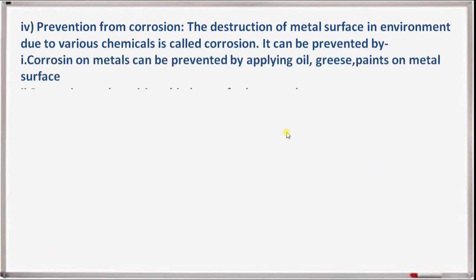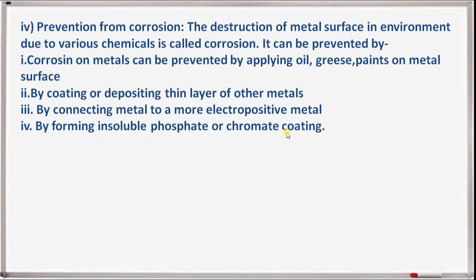Fifth short note: prevention from corrosion. The destruction of a metal surface in the environment due to various chemicals is called corrosion. It can be prevented by applying oil, grease, or paints on the metal surface; by coating or depositing a thin layer of other metals; by connecting the metal to a more electropositive metal; or by forming insoluble phosphate or chromate coatings.